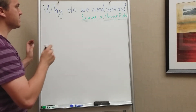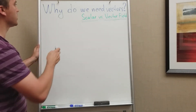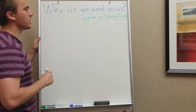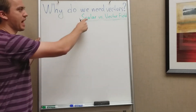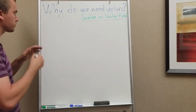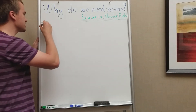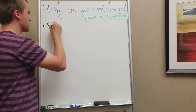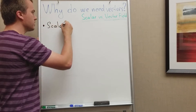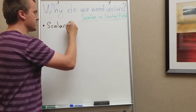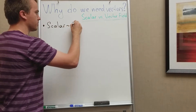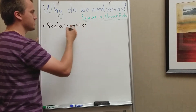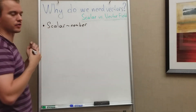Hello guys, in this video I want to discuss why we need vectors and scalar with vector fields. So let's start with a scalar. A scalar is, in some sense, a number — it's just another way of saying a number is a scalar.